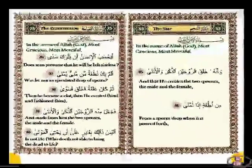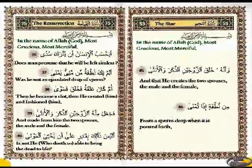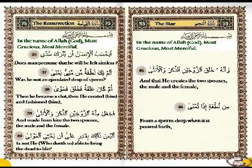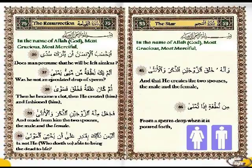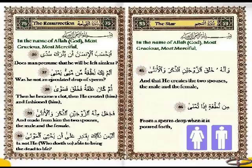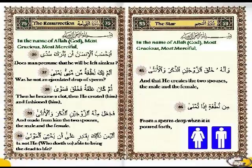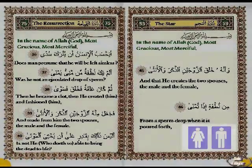In two verses of the Holy Quran, the Almighty refers to the creation of the human sexes, male and female, and shows us with simplicity from which the sex of the human is created. Before we see in detail these two verses of the Holy Quran, we will make a brief presentation of the process of human sex determination according to science today.